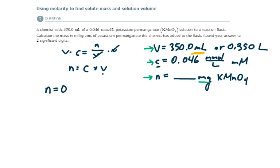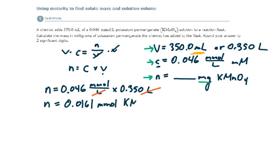So now when we plug this in, our concentration of 0.046 millimoles per liter times the volume of 0.35 liters, liters will cancel. And we are left with 0.0161 millimoles as the amount of potassium permanganate present.